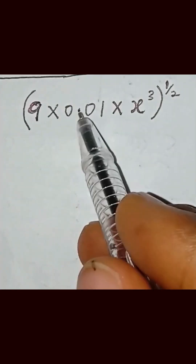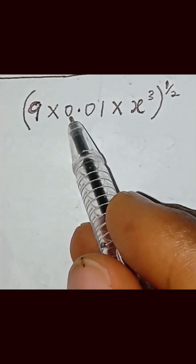You have 9 multiplied by 0.01 multiplied by x raised to the power 3, all inside a bracket raised to the power half. So here, this multiplied by this gives us 0.09.